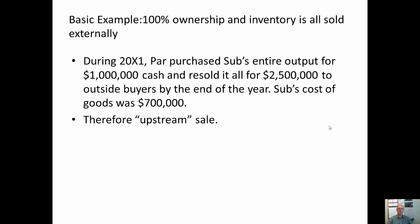The first example is pretty simple and is really here just to illustrate the basic elimination that you do for any intercompany sale. We have a parent company purchasing all of its subsidiary's output for a million cash, reselling it for $2.5 million to external buyers, all within the year of this million dollar sale. The original cost to the subsidiary was $700,000, and since it sold from the subsidiary to the parent we call it an upstream sale.